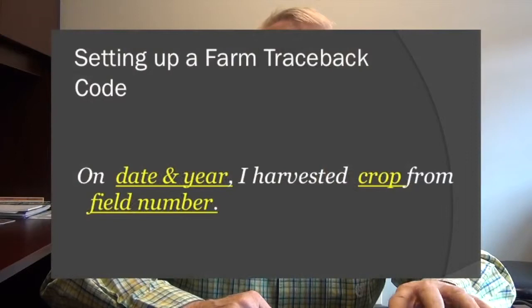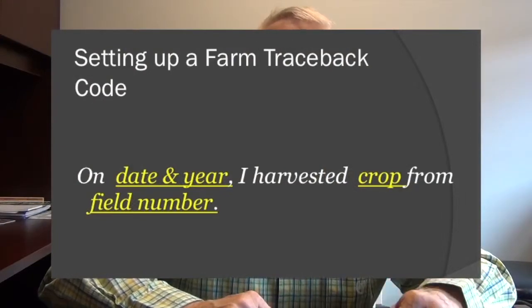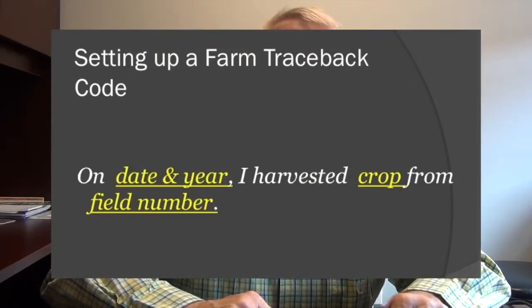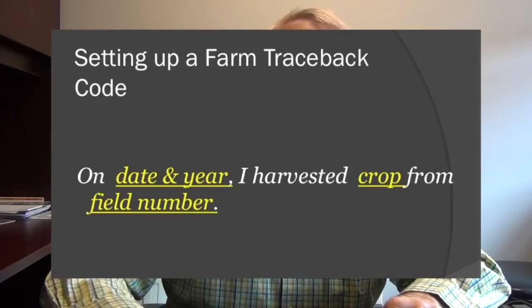Just to review briefly, the first three digits are Julian calendar digits, and the second two digits are the last two digits of the year.